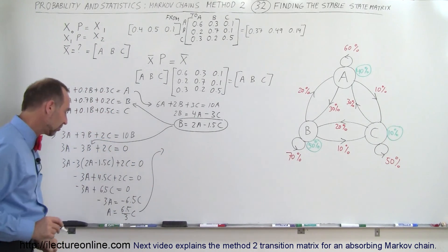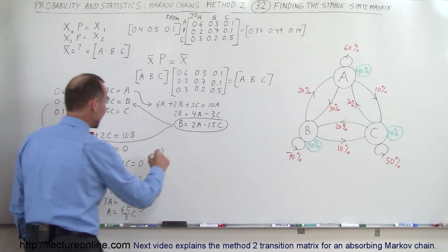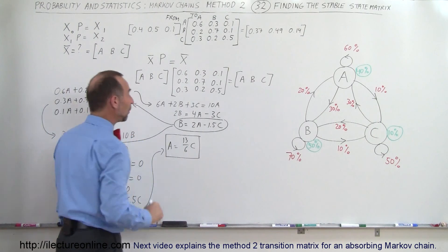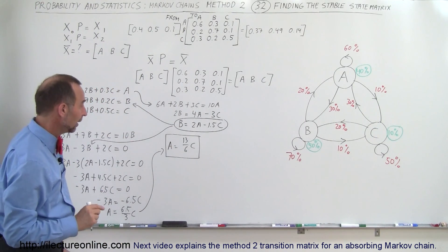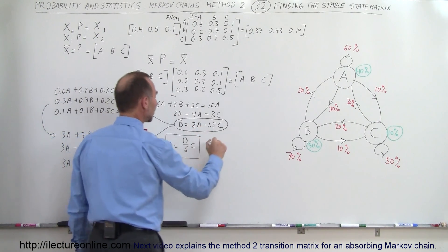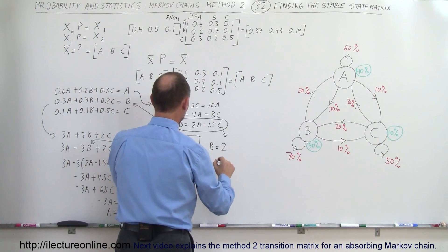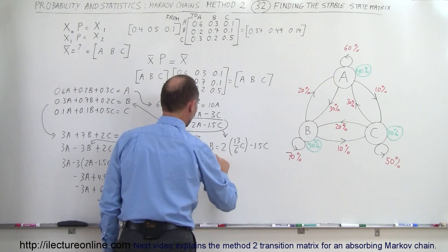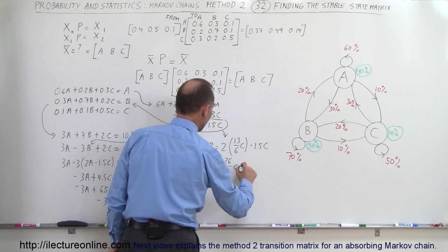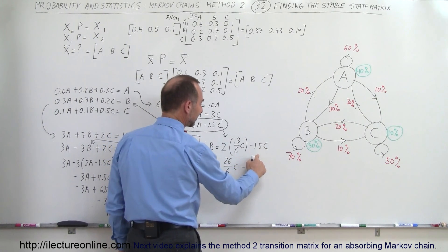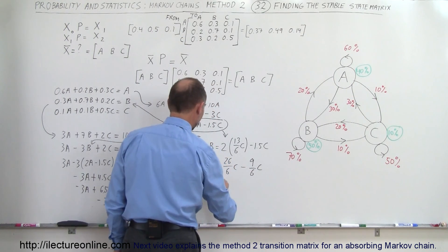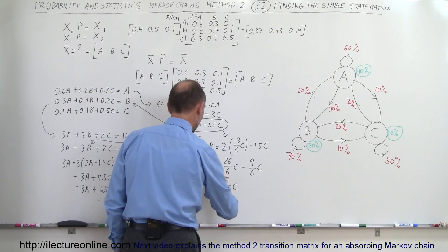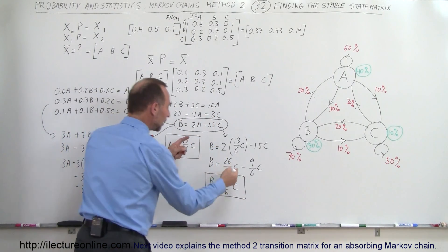So now we have our first relationship: A = (13/6)C. Now we can find B by plugging (13/6)C in for A in the earlier expression B = 2A − 1.5C. That gives B = 2·(13/6)C − 1.5C = 26/6 · C − 9/6 · C = 17/6 · C. So now we have both A and B expressed in terms of C.